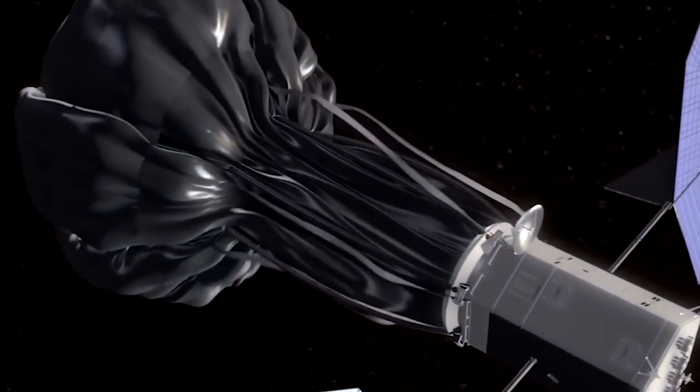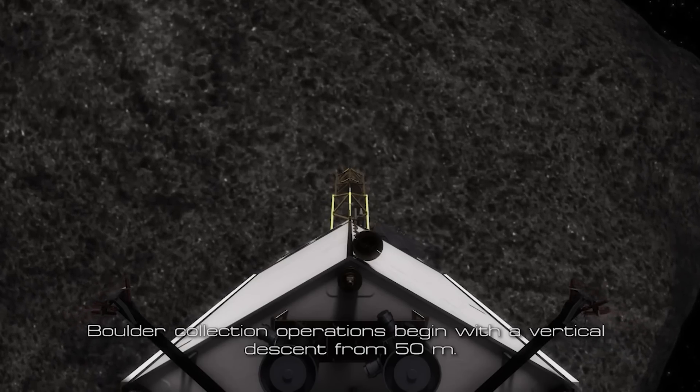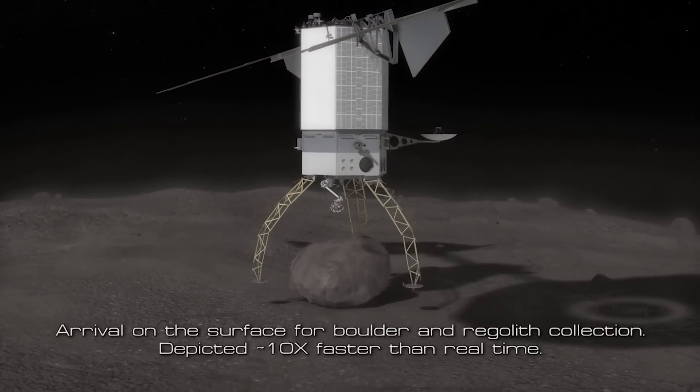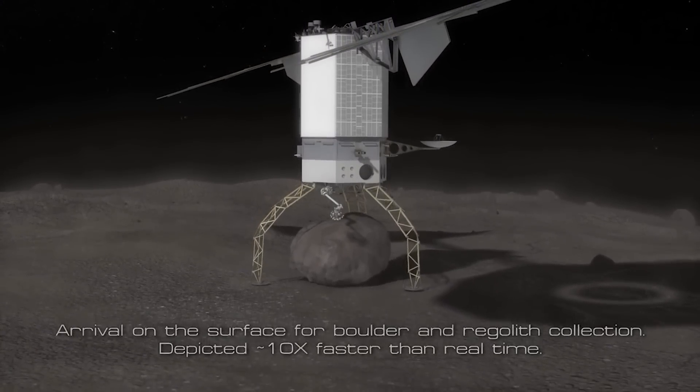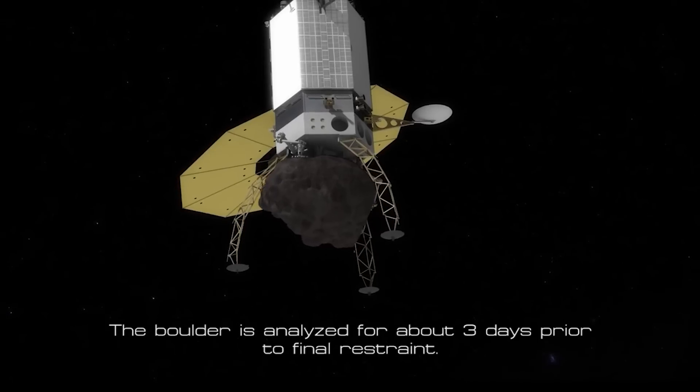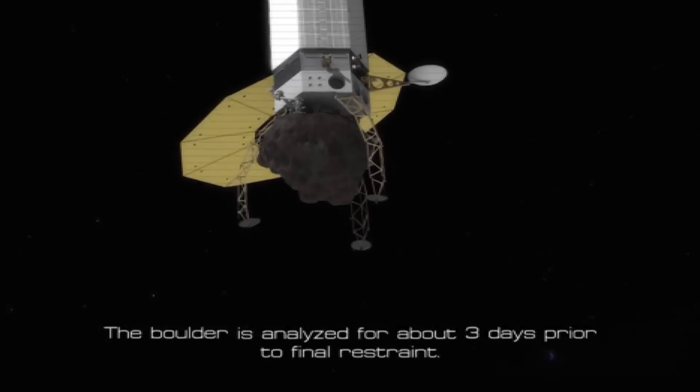There's also an alternative version of this plan that involves sending the craft to a much larger asteroid. So instead of capturing the whole thing, a robotic arm would essentially snatch a giant boulder from the surface of the asteroid and contain it using the same Liam Neeson bag method.